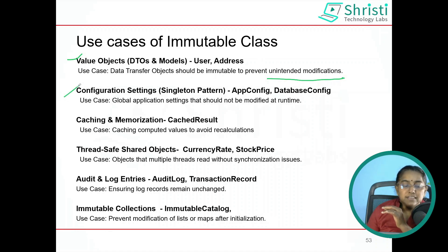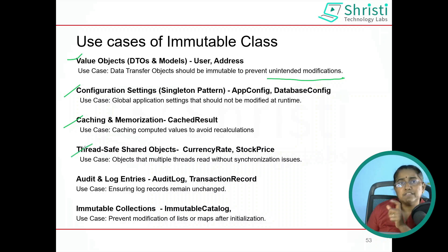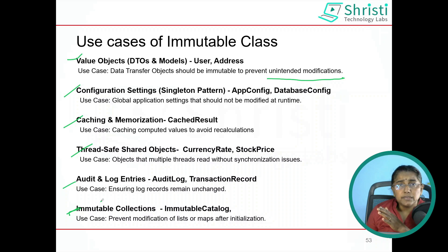Similarly, in configuration settings, if you don't want others to change configurations for your application or database, you can use immutable classes. For caching, whatever data you are caching should not be changed — so go for immutable classes. For thread-safe shared objects, multiple threads sharing the same object means the value should not be changed, so create an immutable object. For auditing and logging, the details should not be manipulated. And for immutable collections, this prevents modification of a list and keeps a set of fixed values.